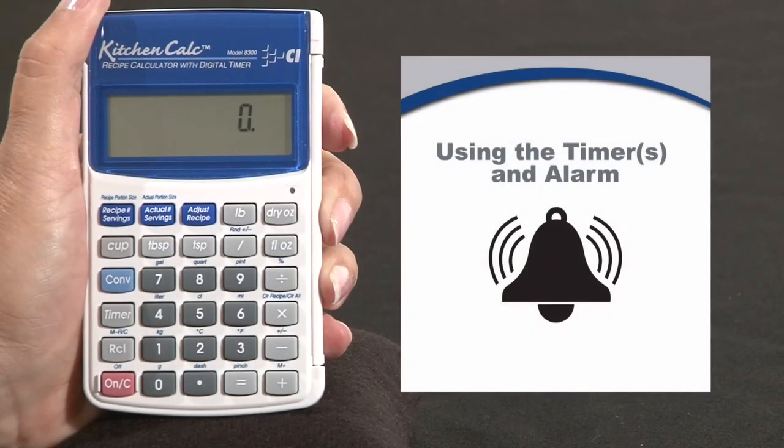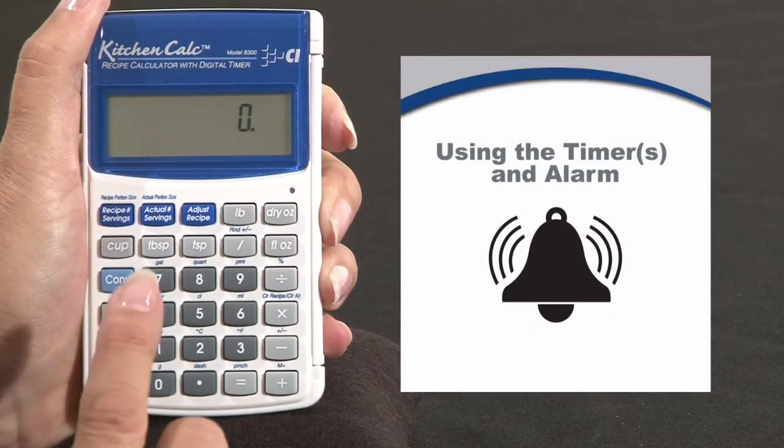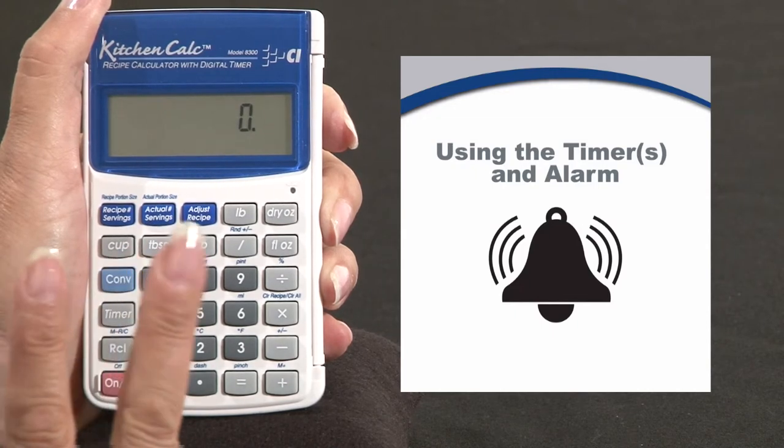The kitchen calcs come with a great feature. They each have timers. The handheld has one timer, the countertop has two.